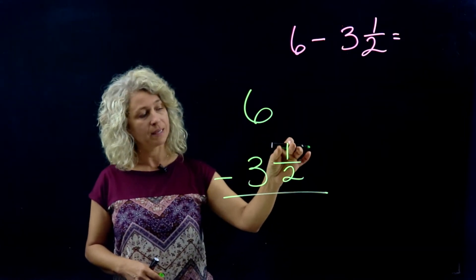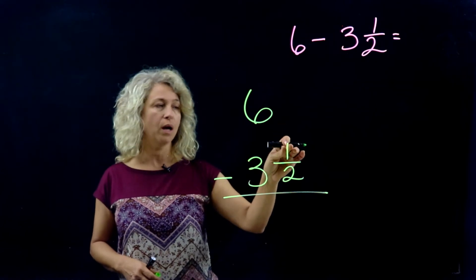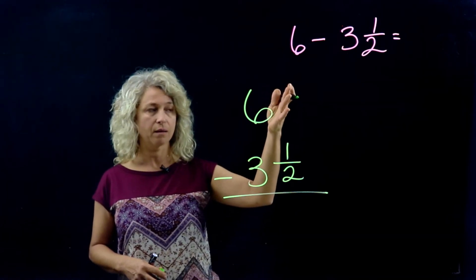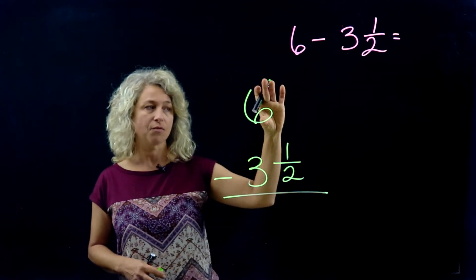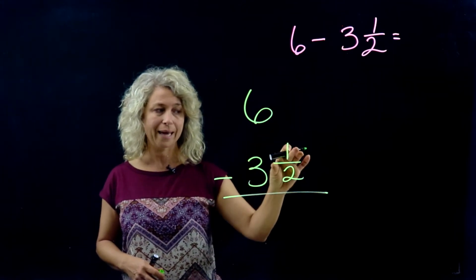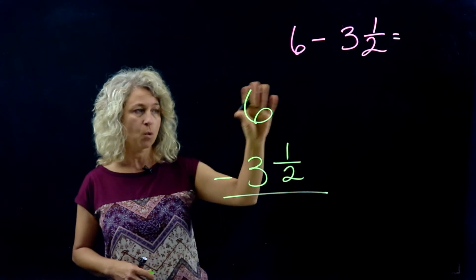So I have to have a fraction here in order to take something away. I'm going to have to do some renaming. So this 6 becomes 1 less, the 6 becomes a 5. And just like we did on the last problem where we had our thinking bubble, we are trying to think how can I rename that one that I borrowed? It has to have the same denominator.